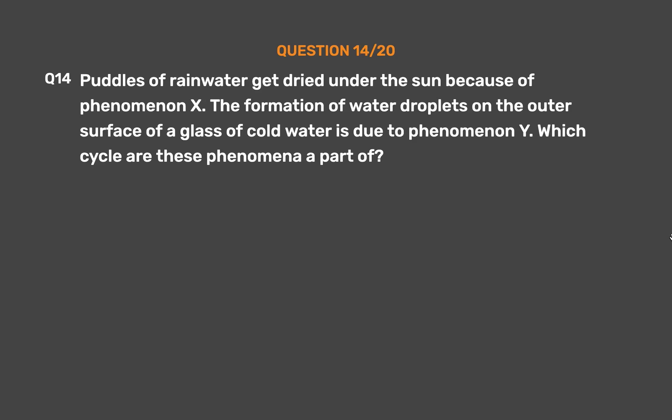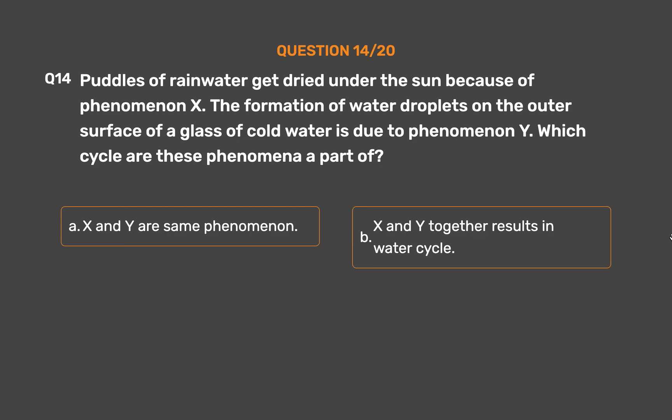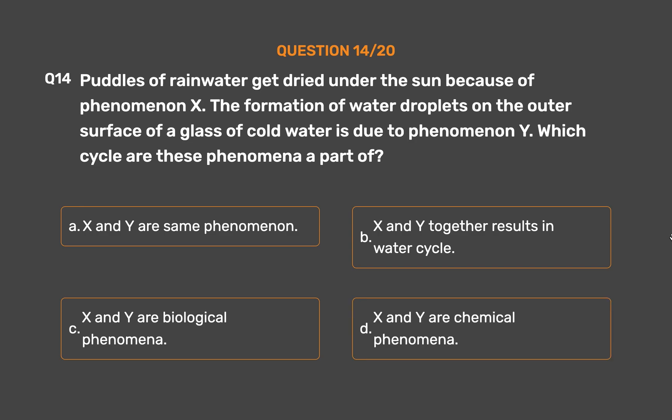Question number 14. Puddles of rainwater get dried under the sun because of Phenomenon X. The formation of water droplets on the outer surface of a glass of cold water is due to Phenomenon Y. Which cycle are these phenomena part of? Option A: X and Y are the same phenomenon. Option B: X and Y together result in the water cycle. Option C: X and Y are biological phenomena. Option D: X and Y are chemical phenomena.